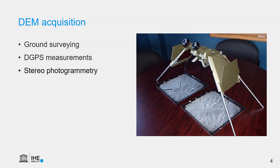Another traditional way is to use stereophotogrammetry. On the picture you see a stereoscope and a stereo pair of aerial photographs with an overlap. In the overlapping area, we can see through this device in 3D. There are special rulers that we can use to measure the elevation of points we see on the photographs. That's also very laborious and requires good skills, and you need to digitize those points to get a raster out of it.